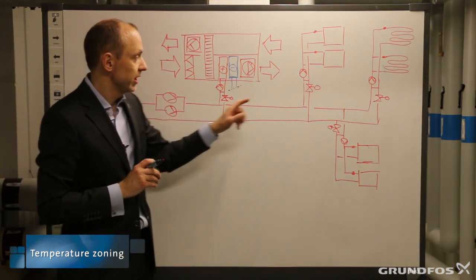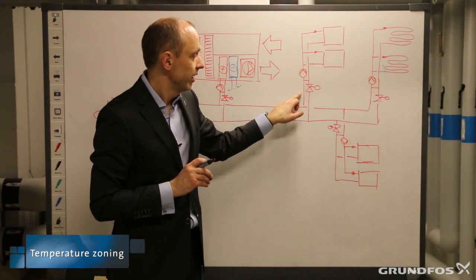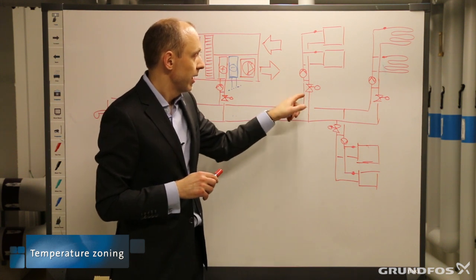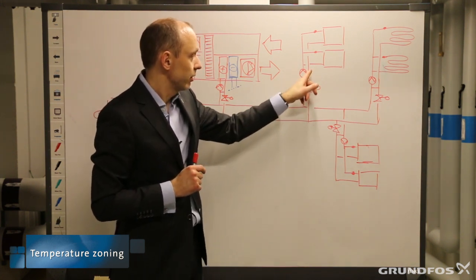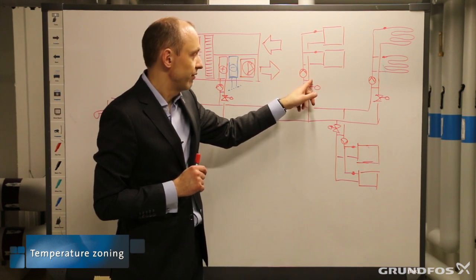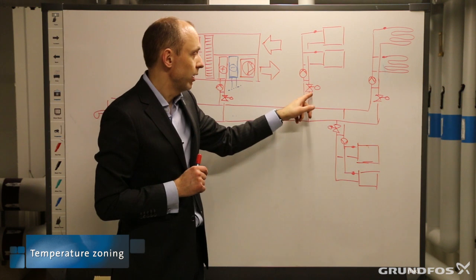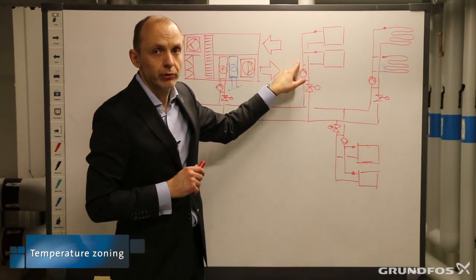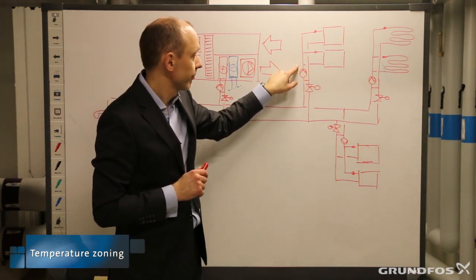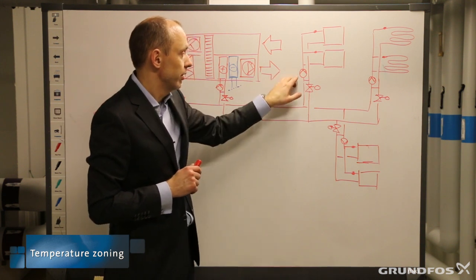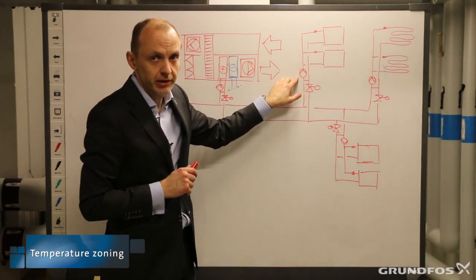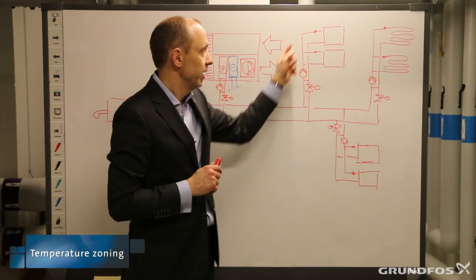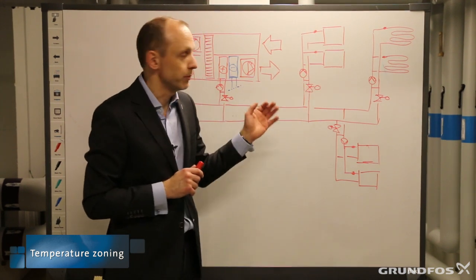The control valve still has the same functionality as before — it still opens and closes according to the performance in the system. But when it closes, some of the chilled or cold water is actually forced back into the flow pipe. So by opening and closing this valve, we can adapt the flow temperature to whatever we would like it to be. We can also run the pump with more or less speed. So now we have a system with both variable flow and variable temperature in the zone.